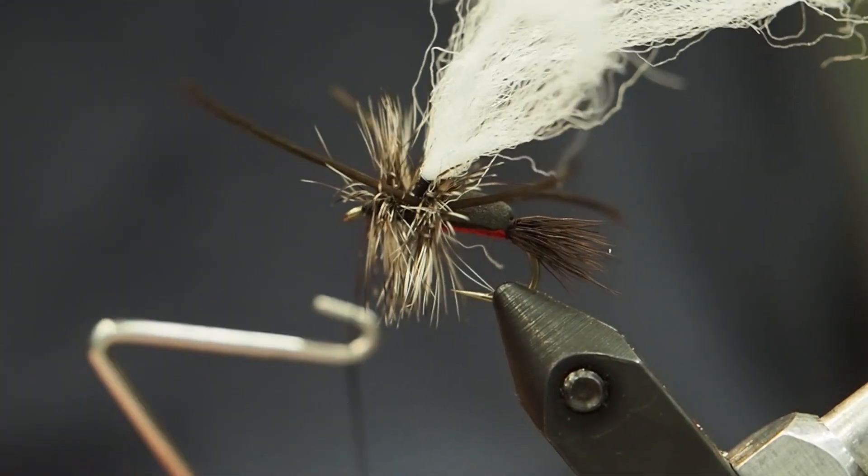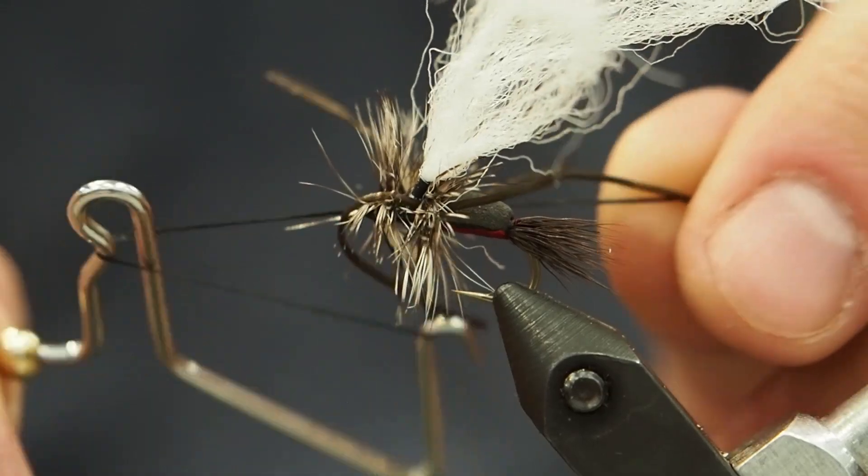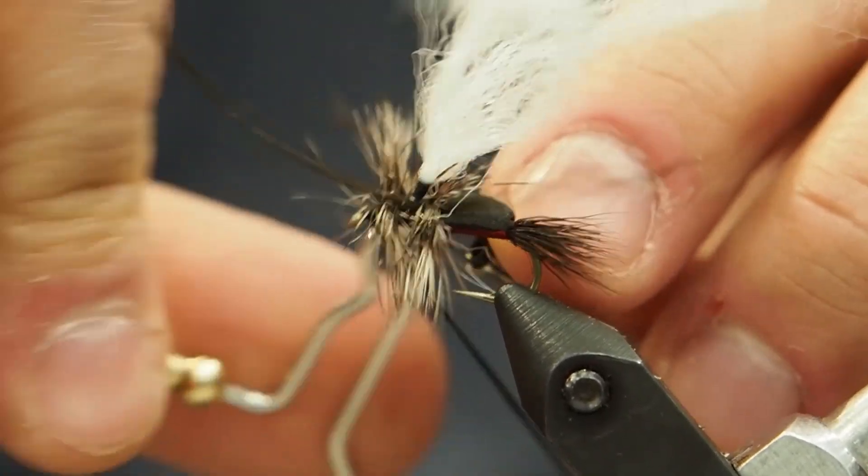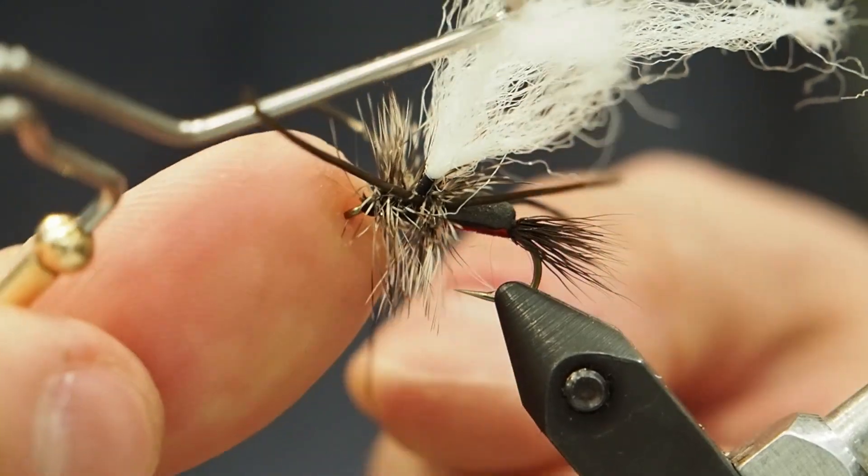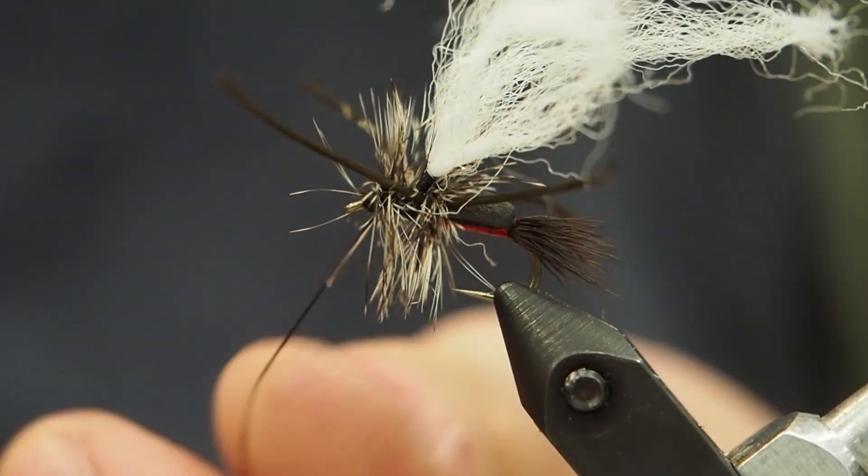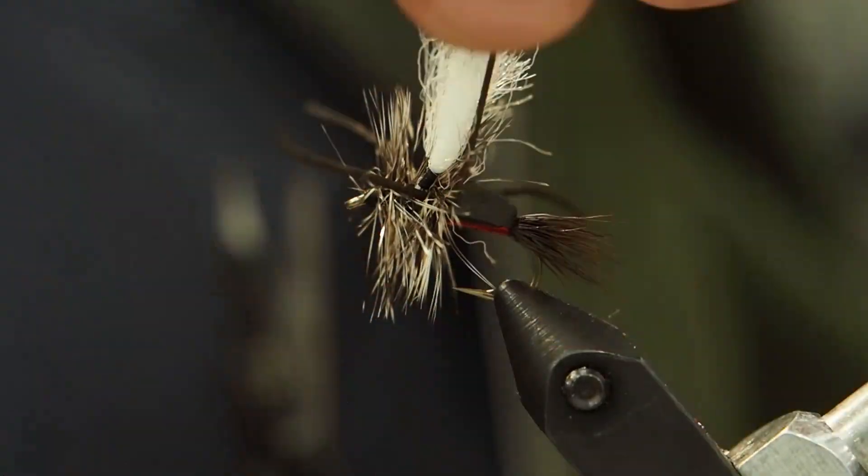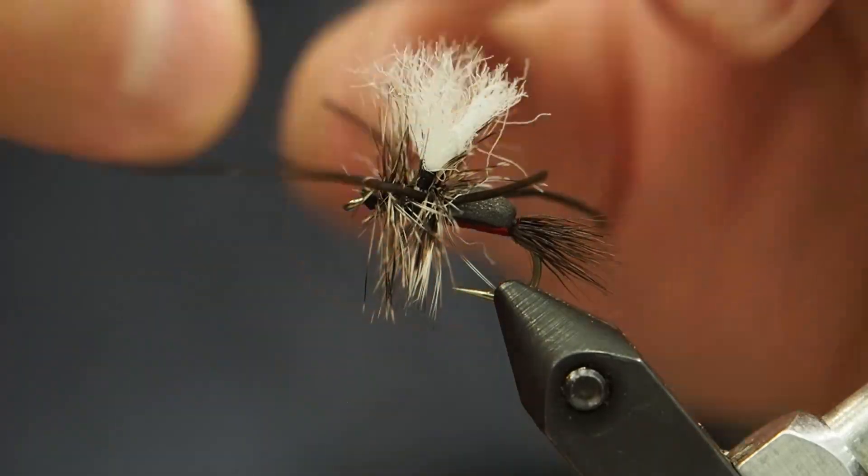Just clean any of the little strands that got trapped. We basically have this done. We'll clip the rubber legs to the right length, and of course we're also going to trim off those wings to be just above the hackle. Now you might find that you actually want to clip some of the hackle fibers at the bottom of the fly near the hook point. That just usually helps it sit in the water a little bit more even. That's totally up to you.